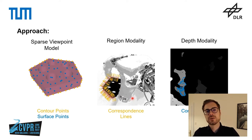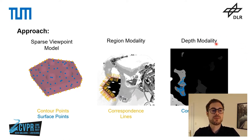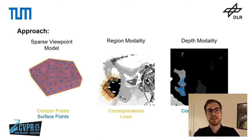In addition to this contour information, we also consider depth information. For the depth modality we use an approach similar to ICP, where we first establish correspondence points on the depth image and then calculate the point-to-plane error.